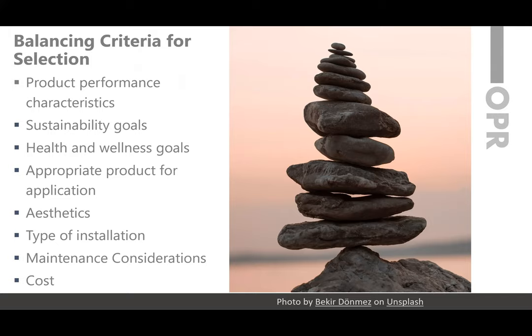This process is different from understanding the overall physical space requirements and adjacencies. It comes before physical space requirements are completed and established, allowing all goals to be set on a high level and subsequently on a detailed level — including product determinations and specific requirements to successfully operate the built environment based upon the owner's needs.